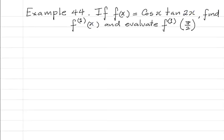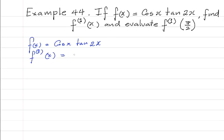Example 44: if f(x) is equal to cosine x times tan 2x. This is a product, where we find f'(x) — the first derivative — and evaluate f'(π/2). So f'(x) is: leave the first, cosine x, differentiate the second — when we differentiate tan we get sec squared, so it's sec squared 2x — and we multiply by the differential of the inside function, which is 2x, giving 2. Plus differentiate the first — when we differentiate cos we get minus sine x — leave the second, which is tan 2x.